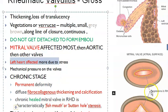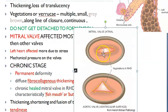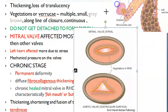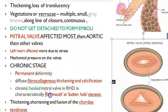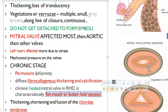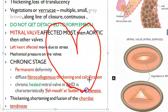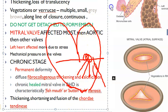In the chronic stage, the mitral valve shows permanent deformity — a fish mouth or buttonhole stenosis appearance. There is also thickening, shortening, and fusion of the chordae tendineae, which attach the mitral valve to the papillary muscle. The aortic valve appears triangular in cross-section in chronic disease.